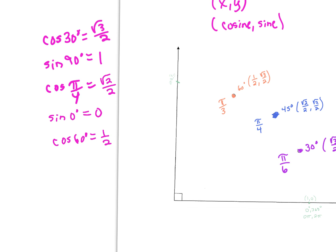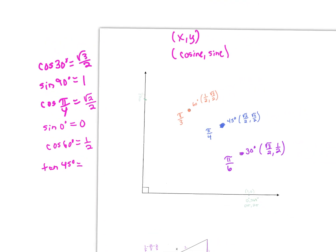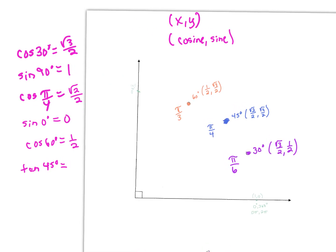Now let's talk tangents. For tangent of 45 degrees — or pi over 4 — tangent is y over x, which is sine over cosine. So we're doing (√2/2) divided by (√2/2), and that equals 1.